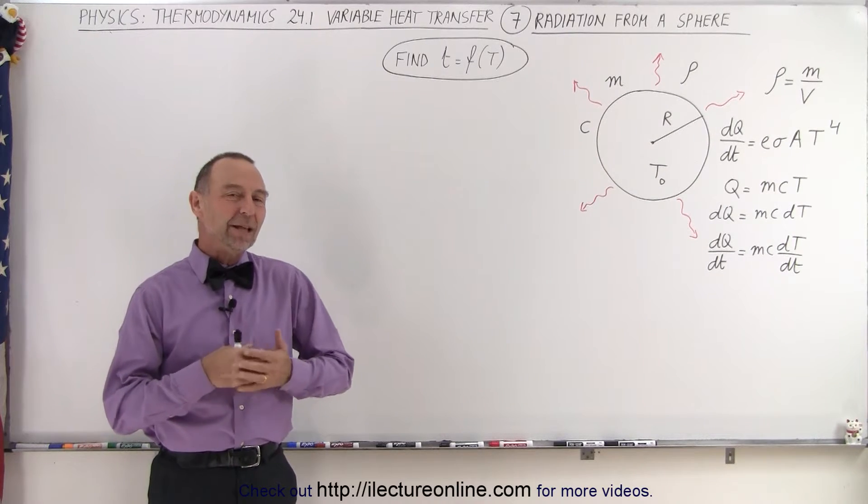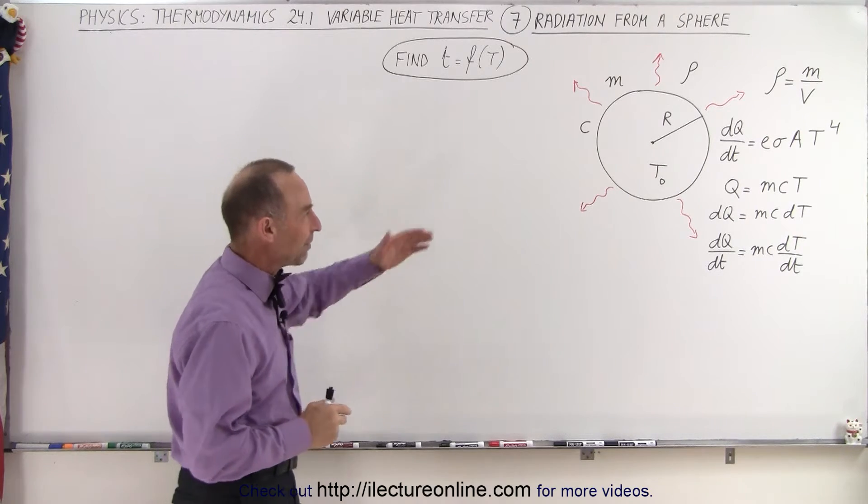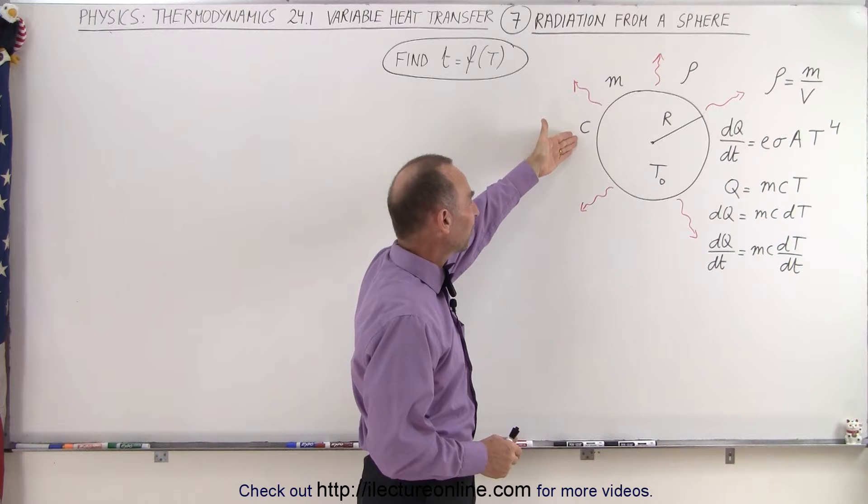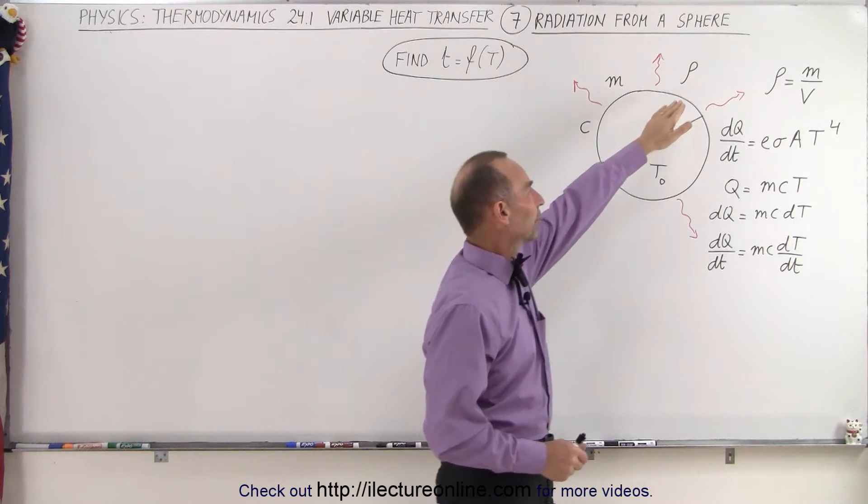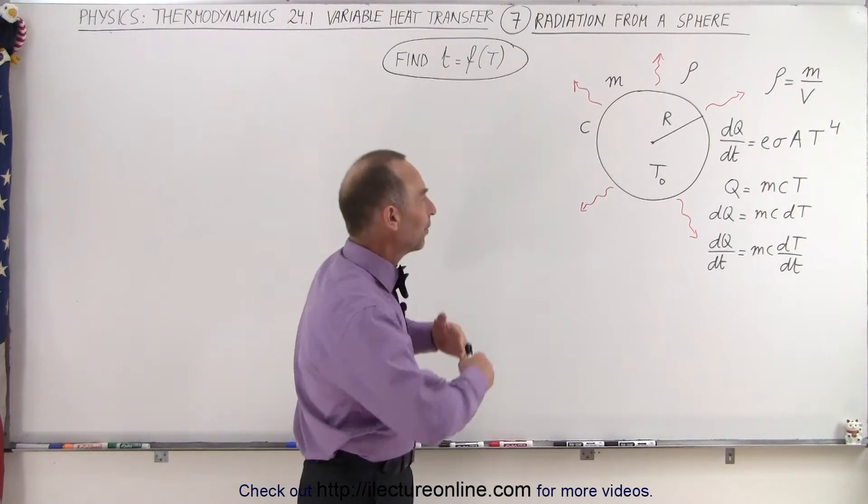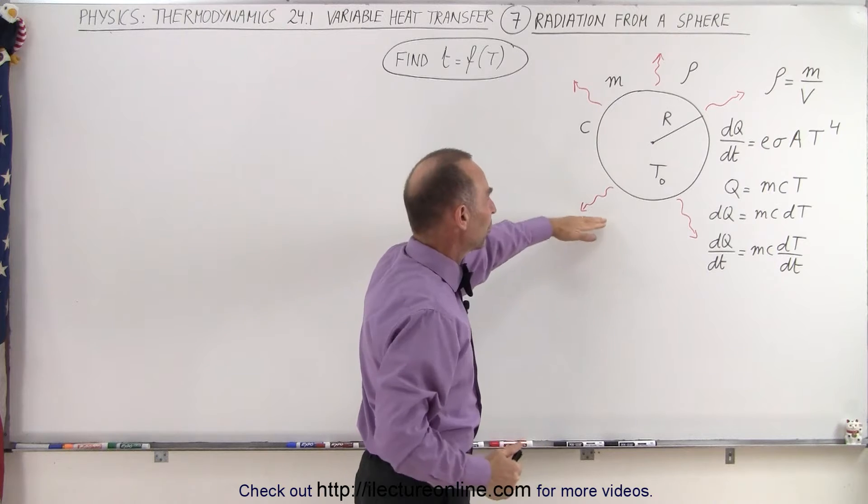Welcome to iLectureOnline. Now let's take a look at the radiation of a spherical object. Here we have an object with a certain amount of mass, a certain amount of specific heat constant, a certain amount of density, a radius r, starting at an initial temperature and presuming that it's going to radiate out into space a certain amount of energy.